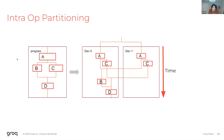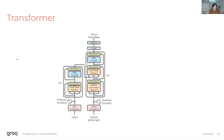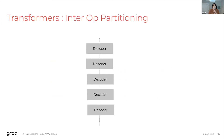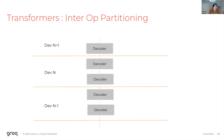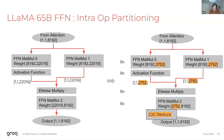Let's make this more concrete by looking at a transformer. A transformer first embeds and encodes inputs, then decodes outputs one token at a time in a chain of decoders. We can apply interop partitioning to the decoder layers — in this visualization I'm grouping two decoder layers per device. However, in practice these decoder blocks are often too big to fit on a single chip, so we further partition each block with intraop partitioning.